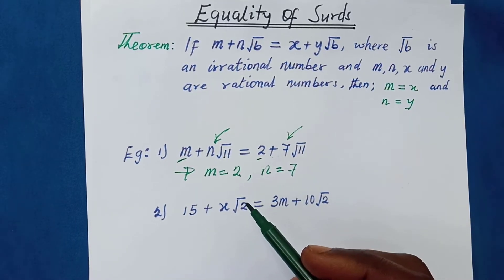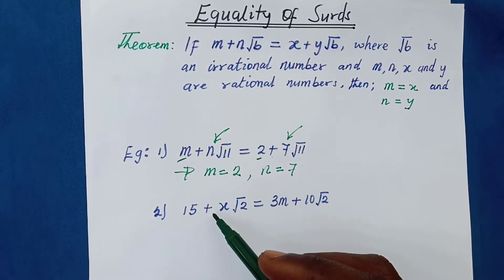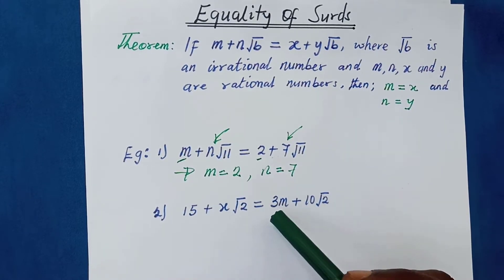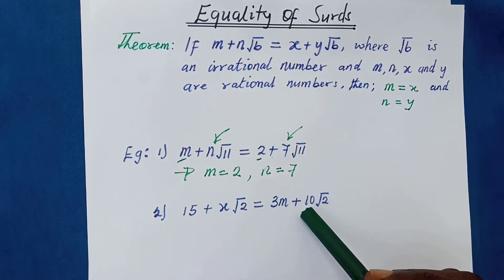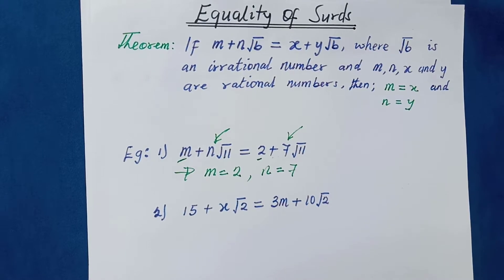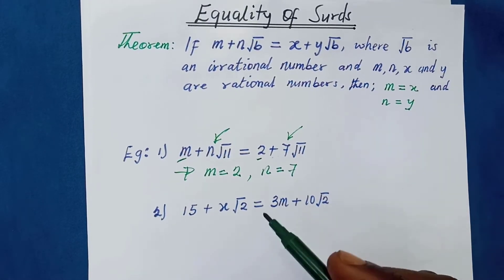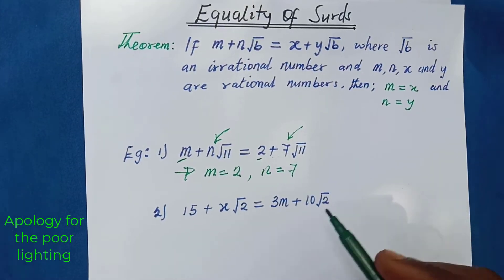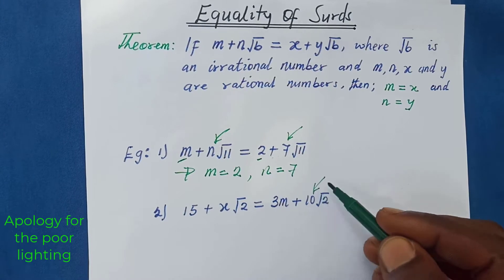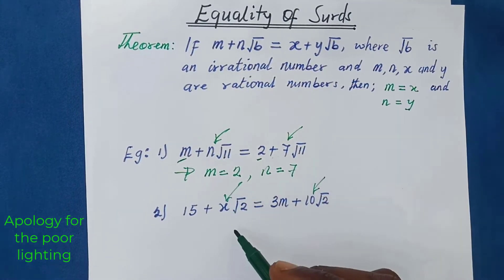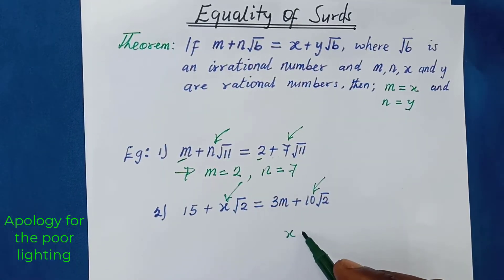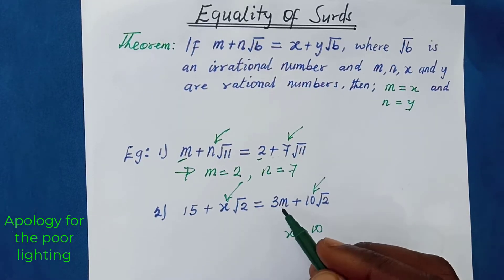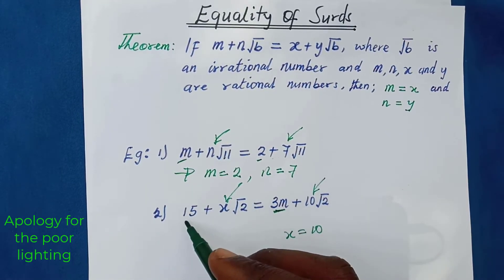The second example: if we have 15 plus x root 2 is equal to 3m plus 10 root 2, you first have to check the surd part to see if the surds are equal. Over here we have root 2 and root 2 — they are both irrational numbers and they are the same. So we can see that the numbers in front of the surd are equal, meaning x is equal to 10.